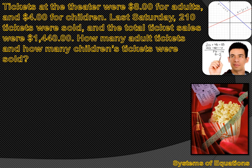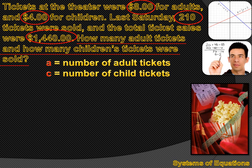We need to find a couple of equations inside this paragraph in order to have a system of equations. To find those equations, I'm going to C-U-C-C — I'm going to circle the numbers and underline the question. The numbers are 8, the price of an adult ticket; 4, the price of a children's ticket; 210, the total number of tickets sold; and $1,440, the total receipt for ticket sales. We underline the question: how many adult tickets and how many children's tickets were sold? There are really two questions, so we're going to need two variables — one for the number of adult tickets and one for the number of children's tickets.